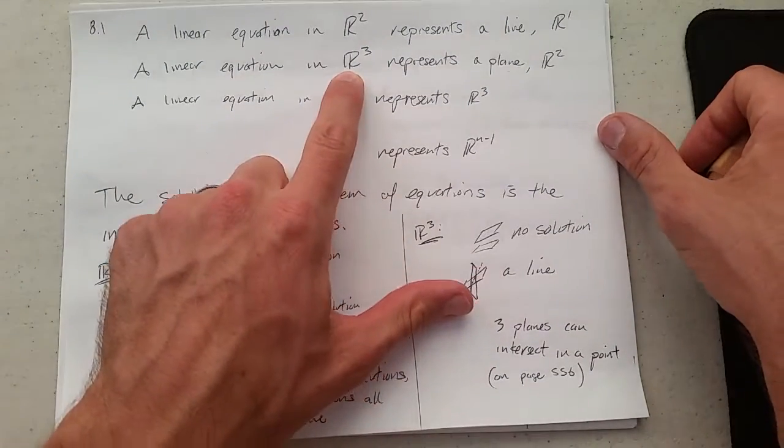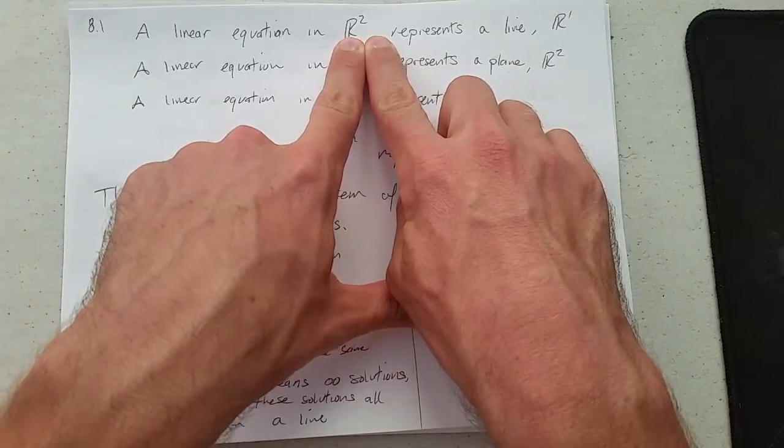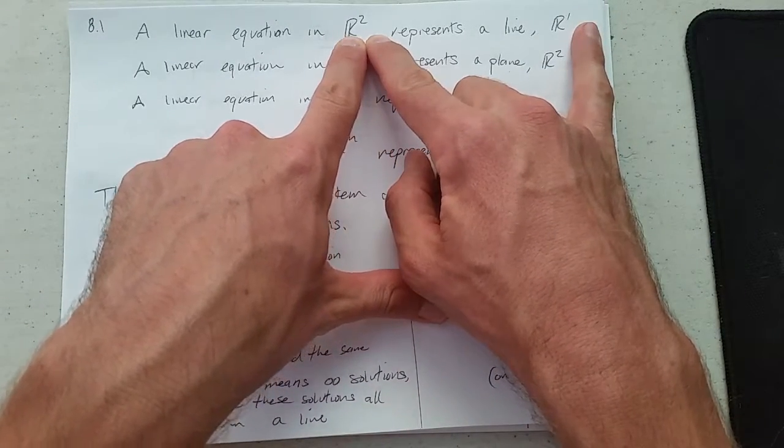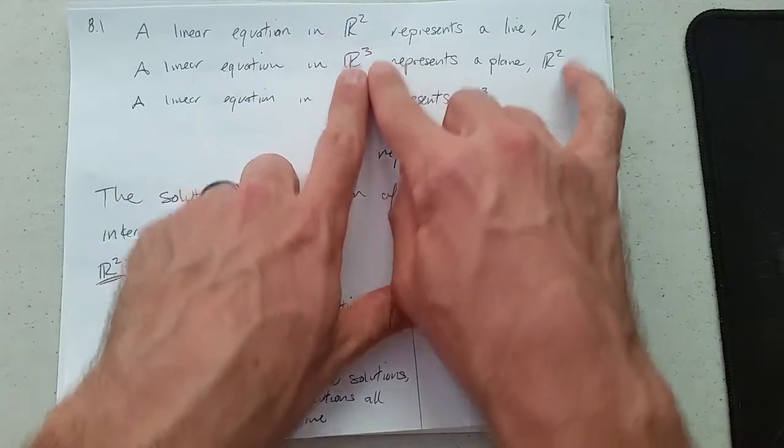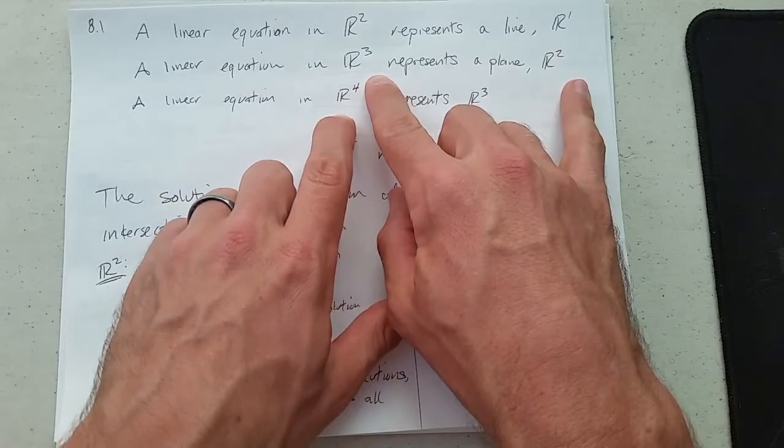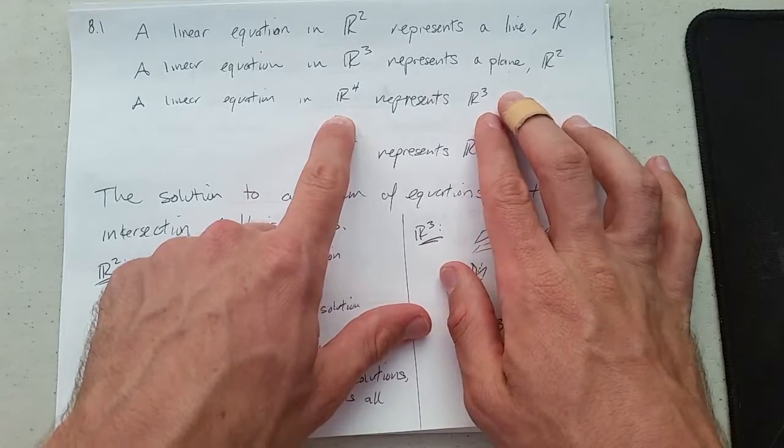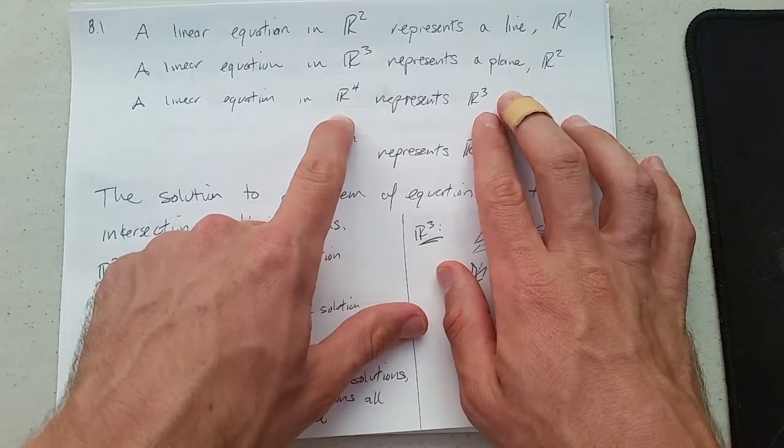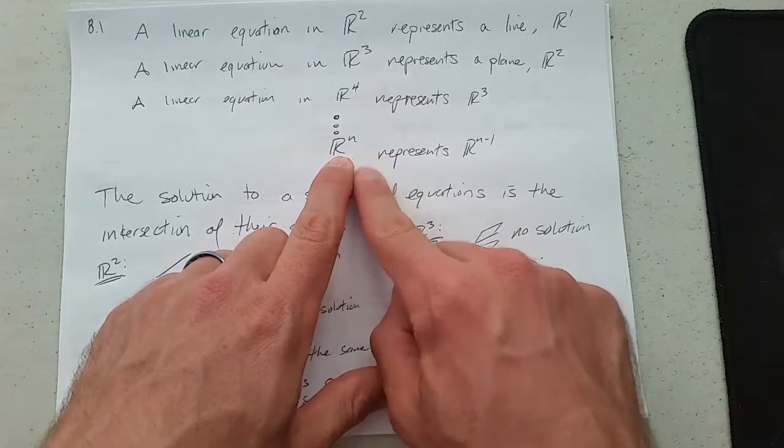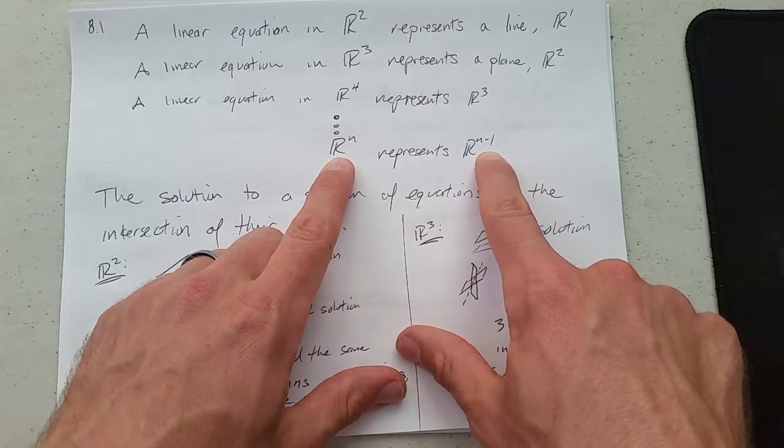What happens when you go up to higher dimensions? The basic pattern is if you have a linear equation in two-space, your solution or graph to that linear equation is one dimension less. In three dimensions, your graph is one dimension less. In four dimensions, your graph would be a three-dimensional linear object. It gets harder to visualize when you go up to higher dimensions, but in n dimensions, the graph represents an n-minus-1-dimensional linear object.